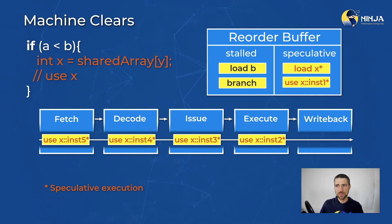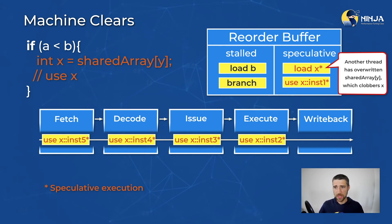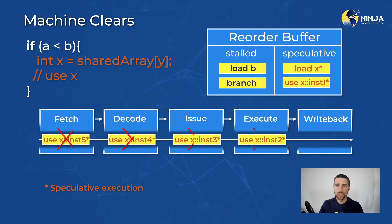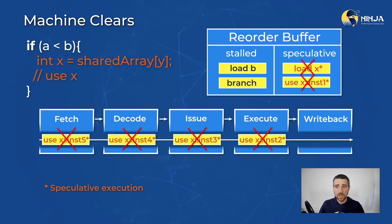Modern superscalar CPUs could have hundreds of instructions in flight. Now suppose another thread has overwritten element y of the shared array, which we read previously. That means the value held in x is no longer valid. The load needs to be restarted and all its subsequent instructions need to be restarted as well. That's quite unfortunate since a lot of work is thrown away, but it doesn't happen too often.